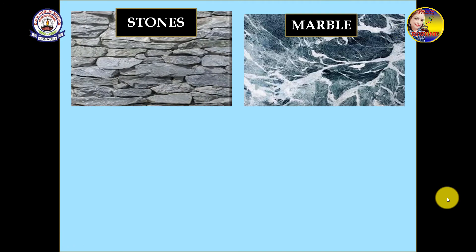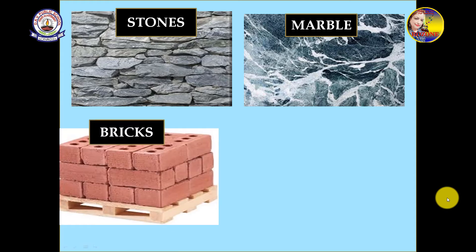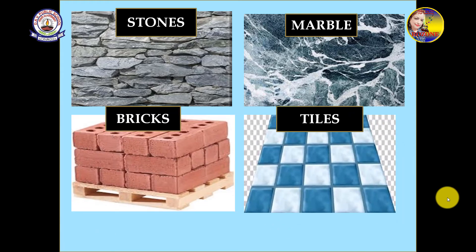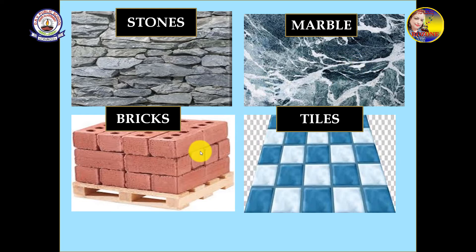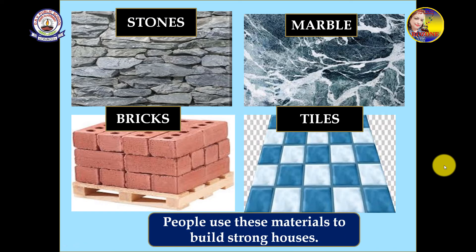Stone, marble, bricks, and tiles are also used. Bricks are used to make the walls, and stone and marble are used for platforms and decorative surfaces. Tiles are put on the floors to make them look beautiful. People use these materials to build strong, permanent houses.